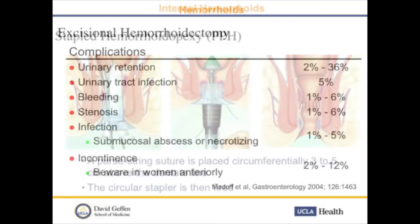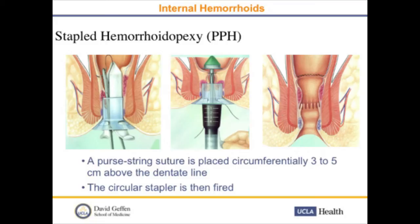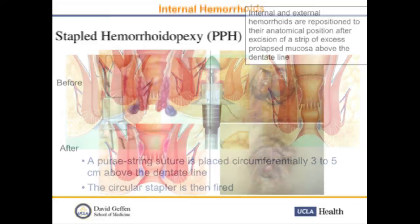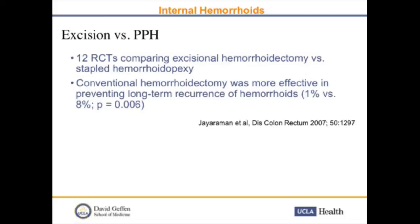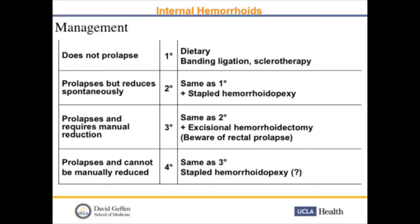Briefly about the procedure for prolapsed hemorrhoids, or stapled hemorrhoidopexy: we place a purse-string suture three to five centimeters above the dentate line, then the circular stapler is fired. The internal and external hemorrhoids are repositioned to their anatomical positions. Some patients with external hemorrhoids are not satisfied because the external hemorrhoids are not removed. Twelve randomized controlled trials comparing the two showed that conventional hemorrhoidectomy was more effective in preventing long-term recurrence, though the absolute numbers of recurrence are low.